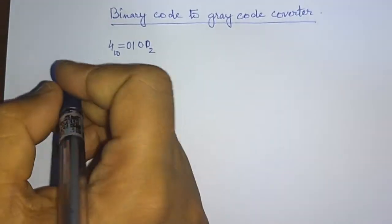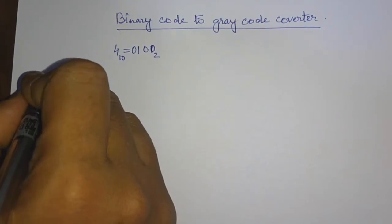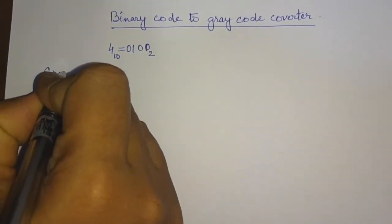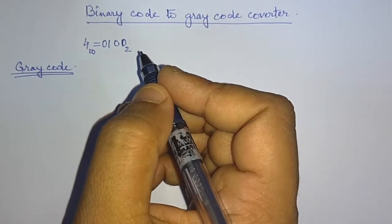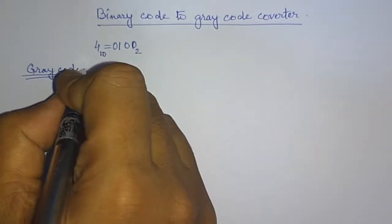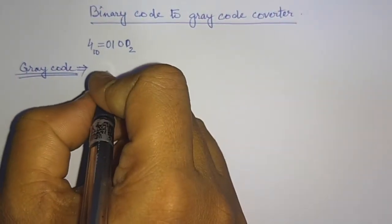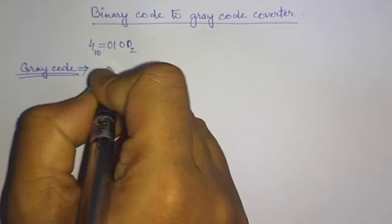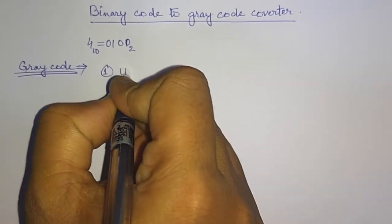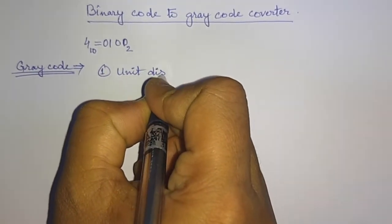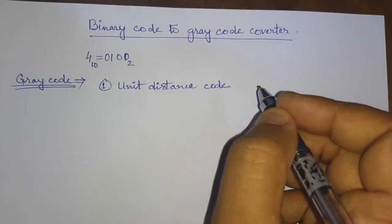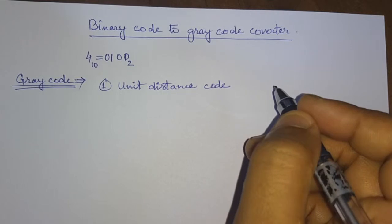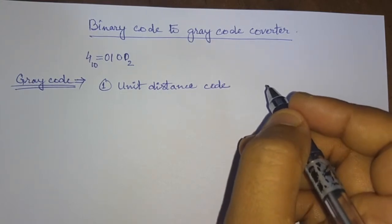Now we will understand what is a gray code. A gray code is nothing but it is a unit distance code. The first characteristic of a gray code is that it is a unit distance code, because from one gray code to its next gray code, there is a difference of only one bit.